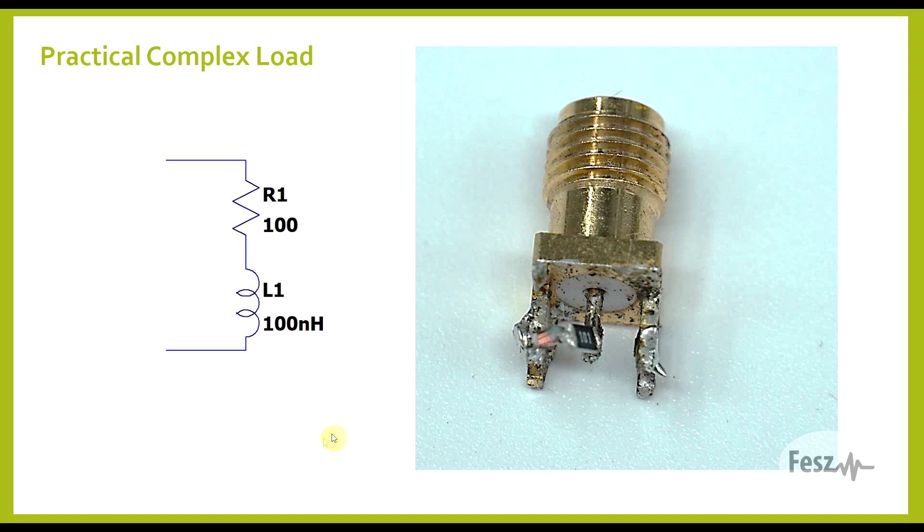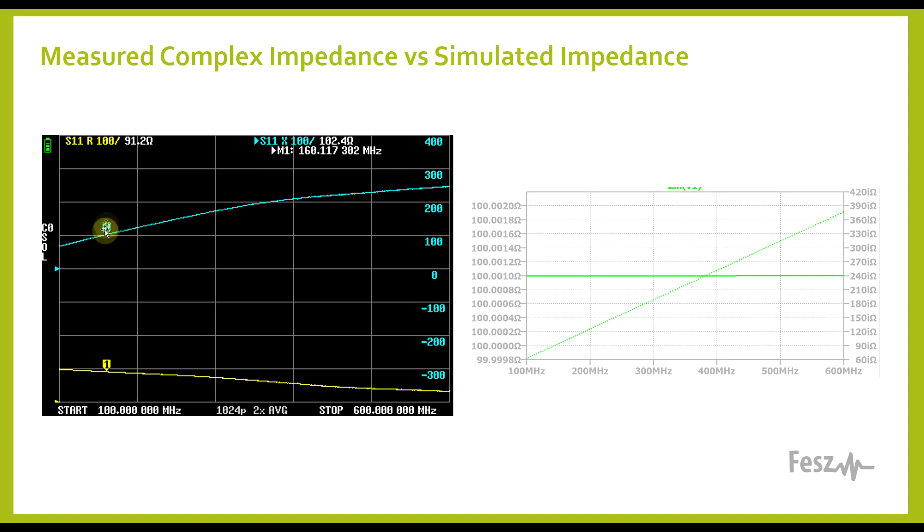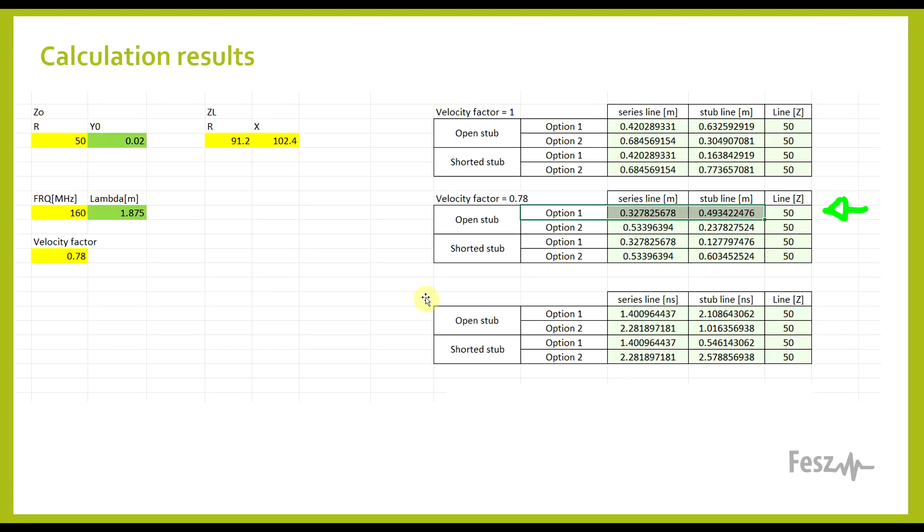The first thing I did was build the complex load. A basic 100nH inductor in series with a 100 ohm resistor, which somehow at 160MHz gave a complex impedance of 91.2 ohms plus 102.4j ohms. I guess there's a bit of stray capacitance involved. Anyway, based on the calculation sheet, I took the shortest combination of lines for an open-ended single parallel stub matching circuit, and based on this I measured out some pieces of 50 ohm transmission line and assembled it all.